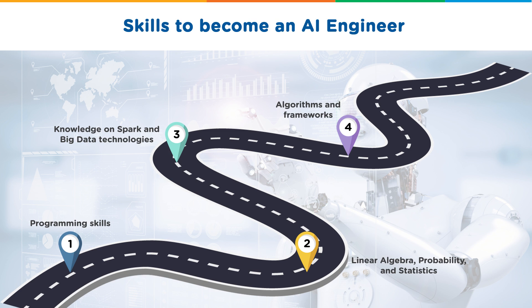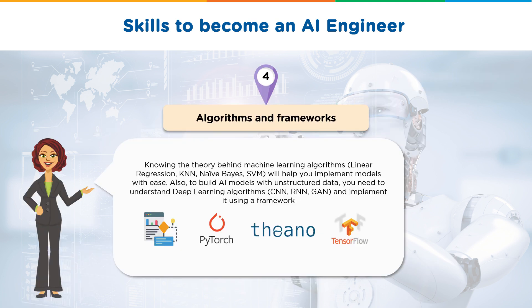The next skill required is to be well-versed with algorithms and frameworks. Understanding how machine learning algorithms like linear regression, KNN, naive Bayes, SVM, and others work will help you implement machine learning models with ease. To build AI models with unstructured data, you also need to understand deep learning algorithms like CNN (convolutional neural network), RNN (recurrent neural network), and GAN (generative adversarial network), and implement them using frameworks such as PyTorch, Theano, TensorFlow, and Caffe.